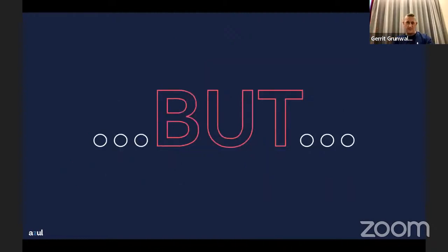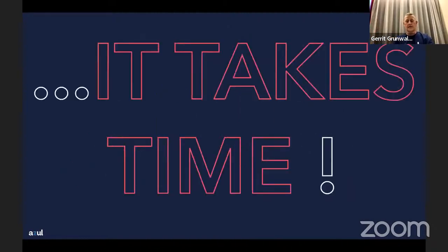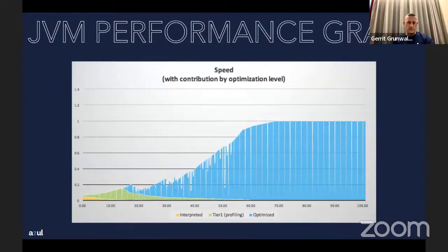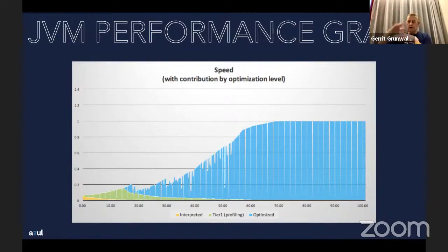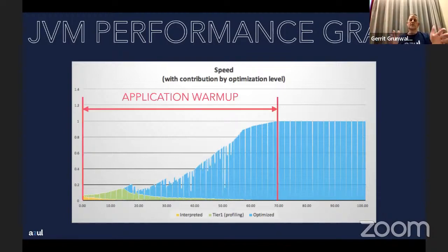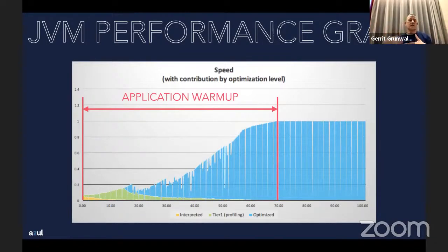The problem is it just takes some time. If we look at the JVM performance graph, we see the yellow part in the lower left — the interpreted part — then the green profiling part, and over time the blue optimizations. At one point it reaches optimum performance. This is what we call application warm-up or JVM warm-up: the time your application needs until all caches are filled, every method has been touched, and so on.